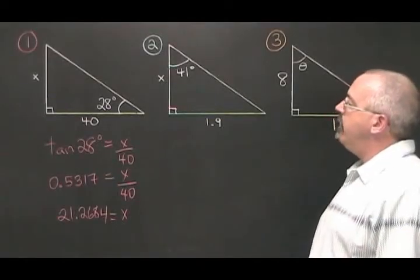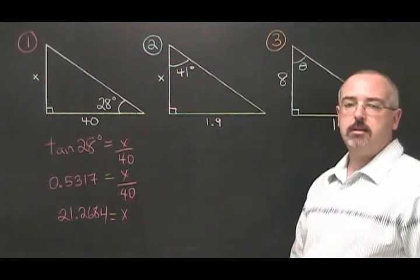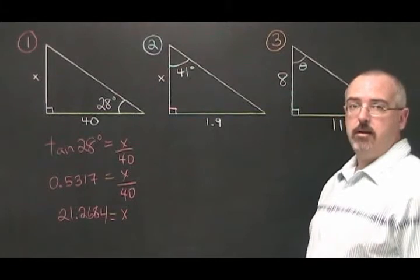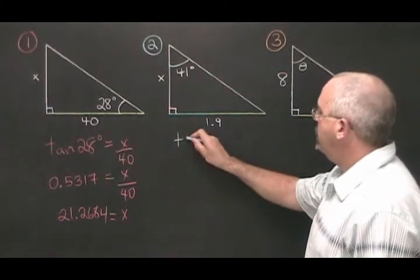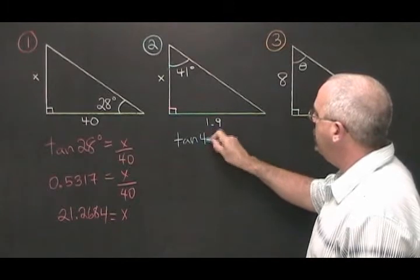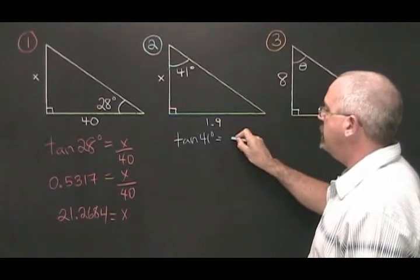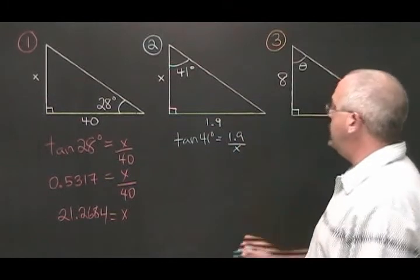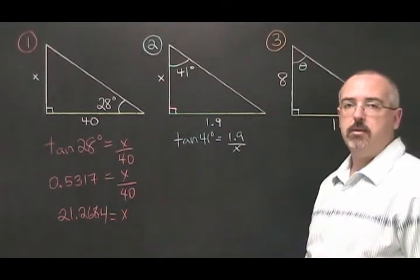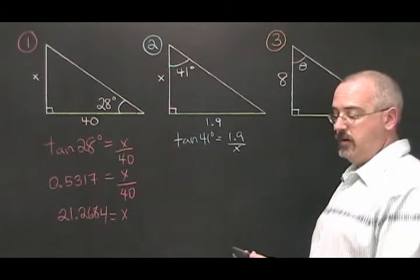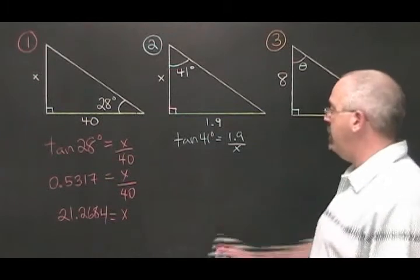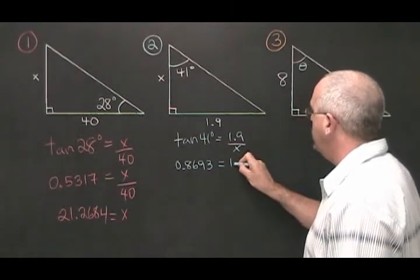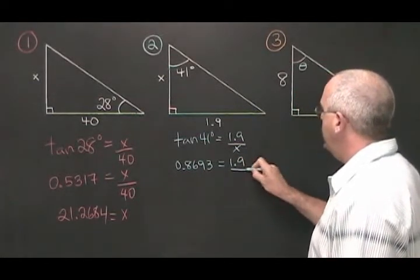In example 2, we have a 41 degree angle. The opposite side is 1.9 and we are looking for the adjacent side. Our TOA formula: TAN of 41 degrees equals opposite 1.9 over adjacent X. We replace TAN of 41 degrees with its value from the calculator which is 0.8693.